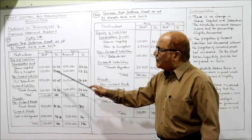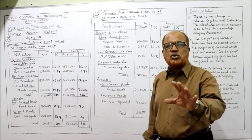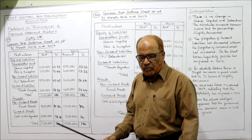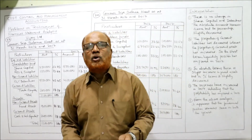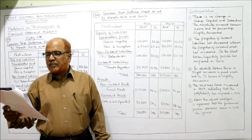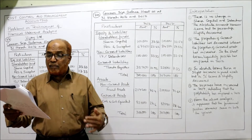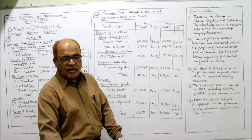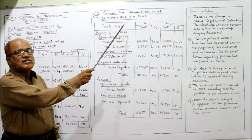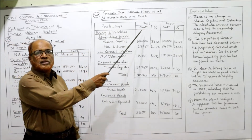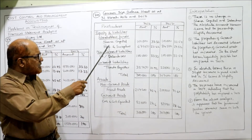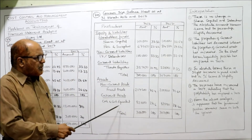Now one more problem I am going to solve — that is the 24th problem. Here you can prepare a common size statement and interpret the result. Again a balance sheet is given, so we have to make a common size balance sheet as at 31st March 2016 and 2017. The same format as in the previous problem is given, and I have copied it — first 2016, then 2017.